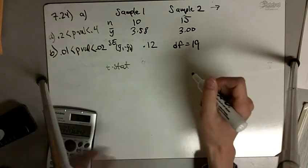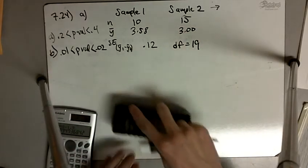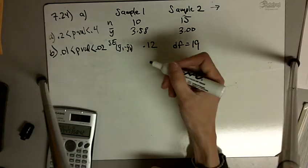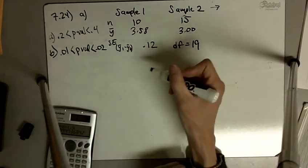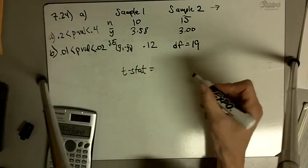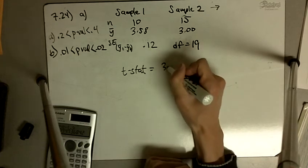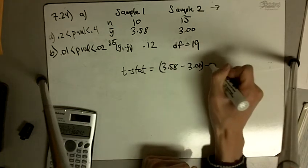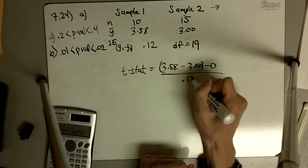If they give us the degrees of freedom, we'll just use what they give us. Otherwise we'll use n1 plus n2 minus 2. Here our t statistic equals 3.58 minus 3.0 minus 0 divided by 0.12.